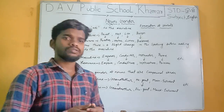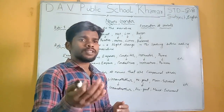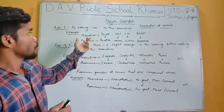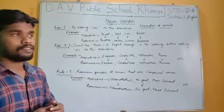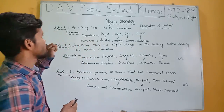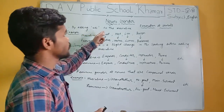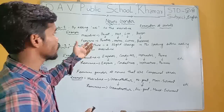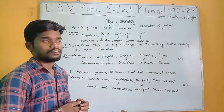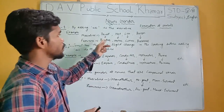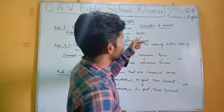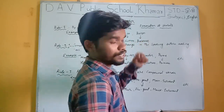There are some rules for the formation of noun gender — masculine to feminine. Rule number one: by adding -ess to the masculine, we can convert it into feminine gender. For example: priest → priestess, host → hostess, lion → lioness, baron → baroness.